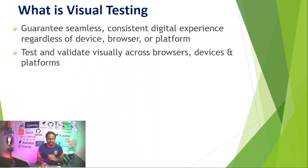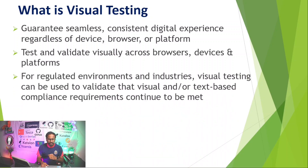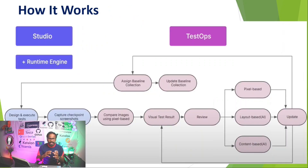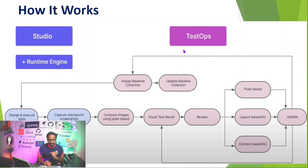Using Katalon Studio, you can perform visual testing on any device, any browser, and any platform — testing and validating visually across browsers, devices, and platforms. For regulated environments and industries, visual testing can validate that all text-based compliance requirements continue to be met. To use this, you need an enterprise license of Katalon Studio, a runtime engine, and access to TestOps.